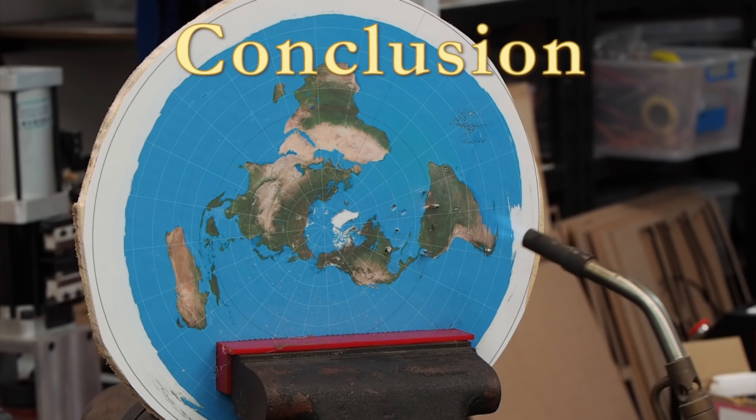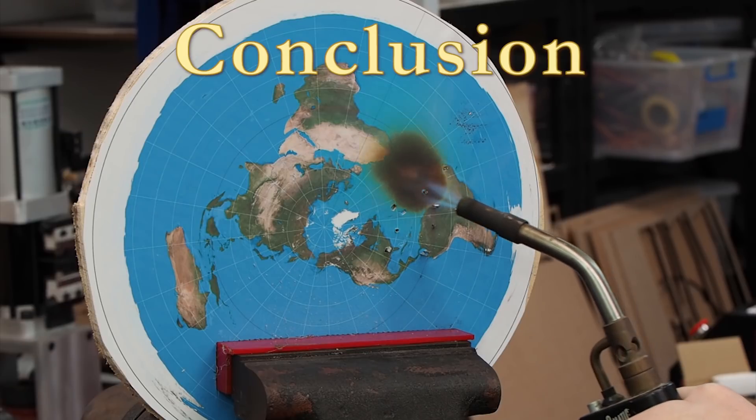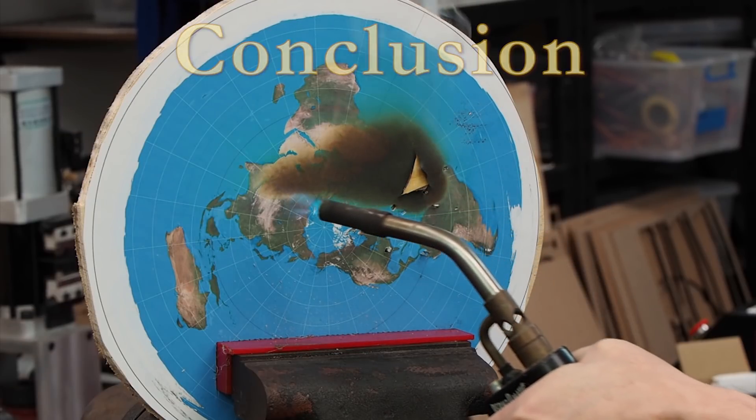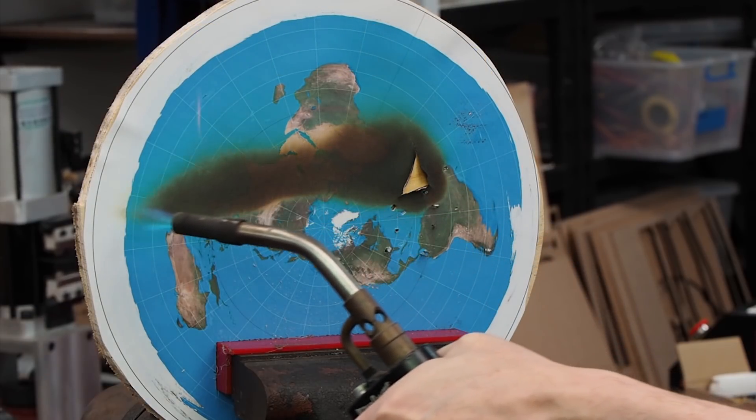In less than five minutes, the equinox and EQ scope mounts have shown that the globe Earth easily explains all the observations we can make.